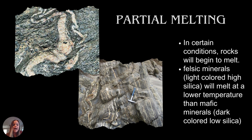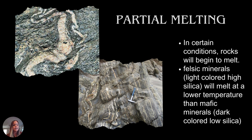As we approach that 50-kilometer mark, we start to see partial melting where the light-colored silica felsic minerals are starting to melt. This shows some of that partial melting, and we're starting to see rocks turn into igneous — they're no longer in the metamorphic zone.